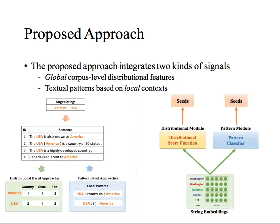Given two target strings, the approaches based on distributional features consider the distributional representations of strings, while the approaches based on textual patterns consider local contexts mentioning both types of strings. To integrate the two signals, we propose an embedding-based framework. Our approach has a distributional module and a pattern module, built on top of the string embeddings, which preserve the semantic meanings of strings. During training, both modules treat the embeddings as features and in turn update the embeddings based on the supervision.